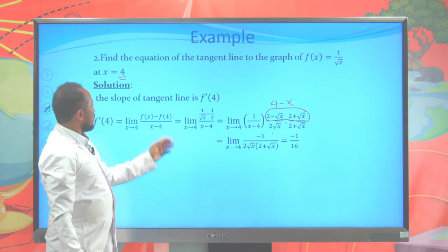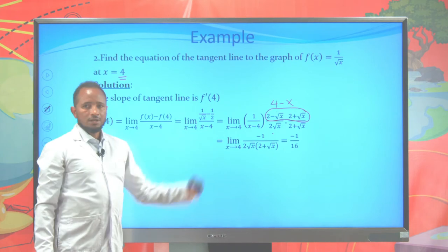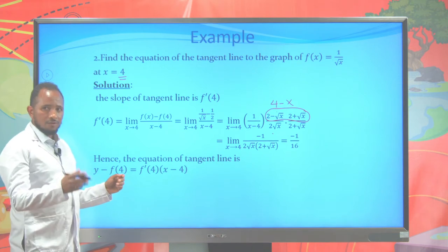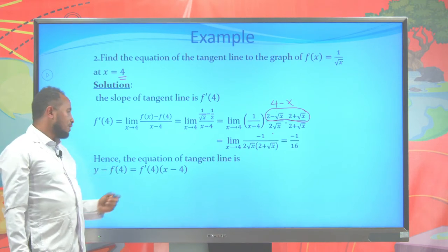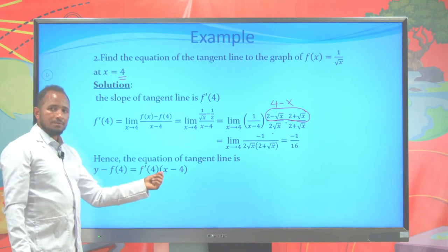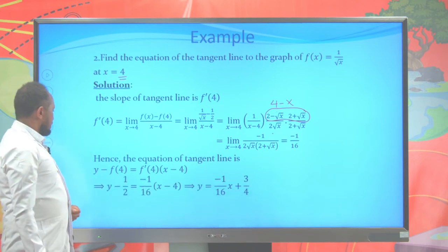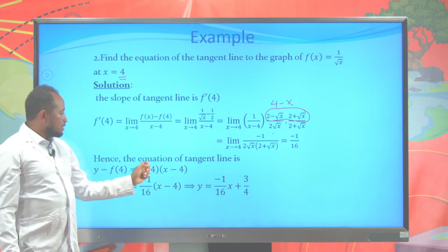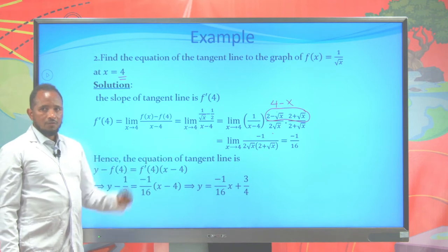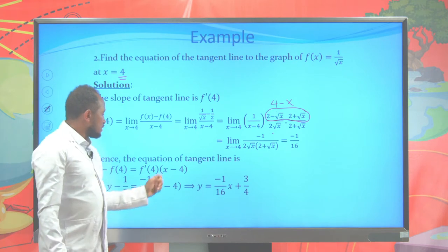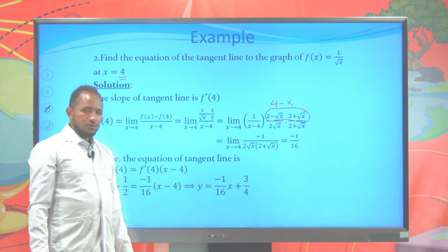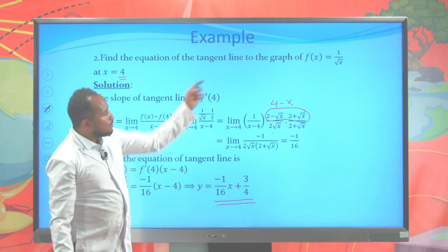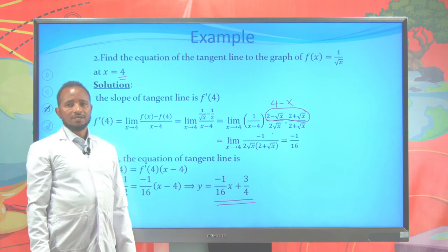The remaining denominator is 2 times square root of x times 2 plus the square root of x. When you put 4 in this expression, you get negative 1 over 16. Therefore the slope, f prime of 4, is negative 1 over 16. Using the tangent line formula: y minus f of 4 equals f prime of 4 times x minus 4. f of 4 is 1 over 2, and the slope is negative 1 over 16. When you simplify, you get y equals negative 1 over 16 times x plus 3 over 4. This is the tangent line equation for f of x equal to 1 over square root of x at x equal to 4.